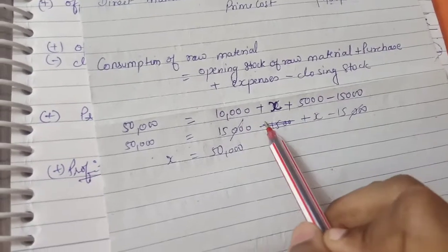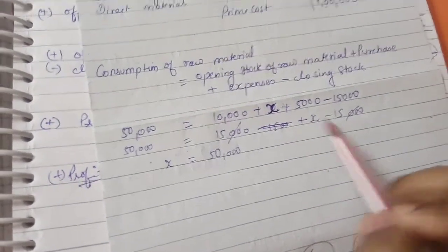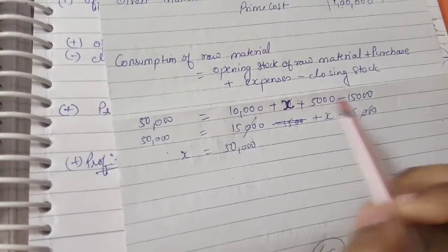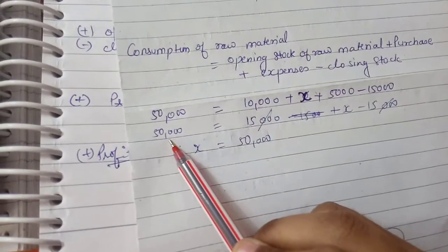equals 50,000. Therefore, X equals 50,000.